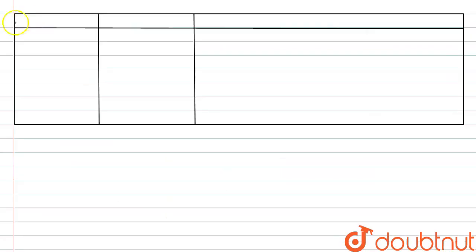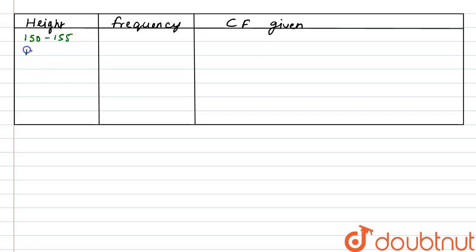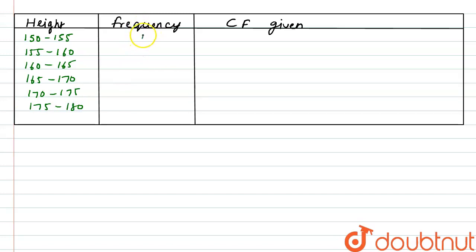In the frequency distribution of heights of students in a class, we have the height, the frequency, and the cumulative frequency (CF) given. The class intervals are: 150–155, 155–160, 160–165, 165–170, 170–175, and 175–180. The frequencies given are 12, B, 10, D, E, and 2. The cumulative frequencies given are A, 25, C, 43, 48, and F.